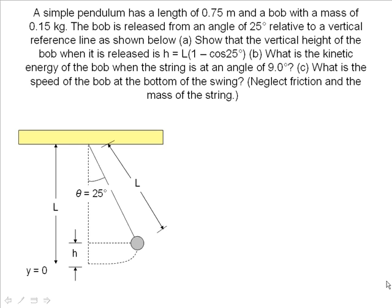This problem has multiple parts. The first part of the problem is asking us to verify the formula to find the height that the bob has raised. This height is important because it is the height that gives the pendulum its potential energy.